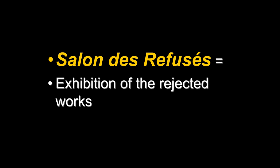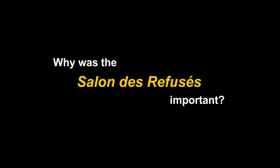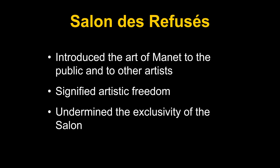People came to the Salon des Refusés — they wanted to see. Why was it so important? First, it introduced the art of Manet to the public and to other artists. No matter how innovative you are, if no one sees your work, you're not going to influence anybody. And it came to signify artistic freedom because it undermined the exclusivity of the Salon — these people didn't get into the Salon, but they still had their exhibition.